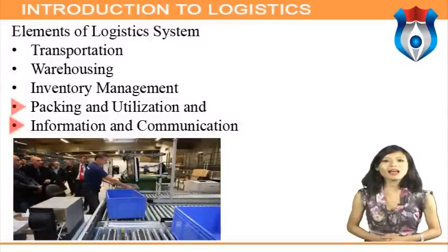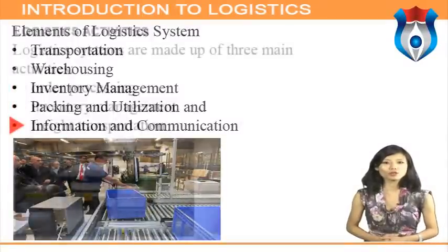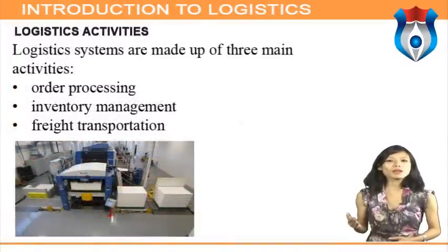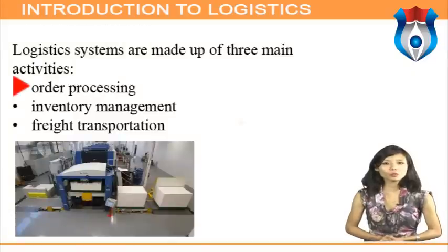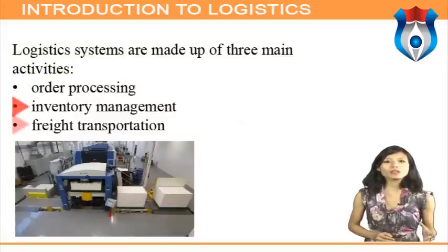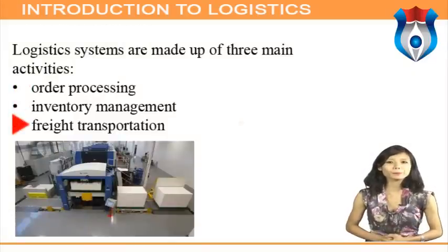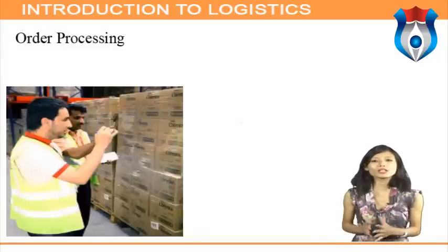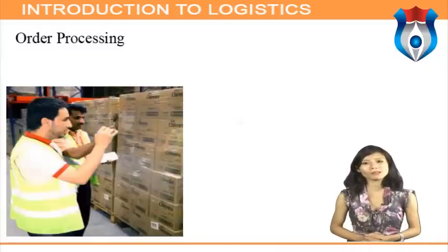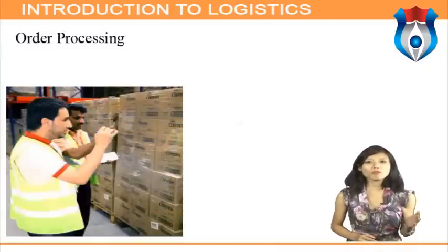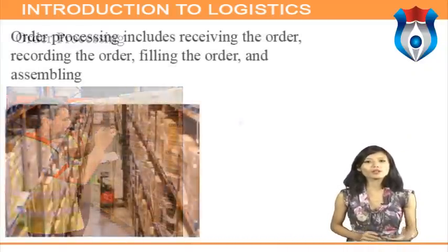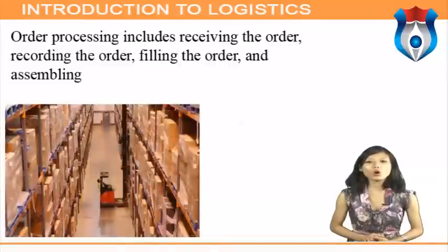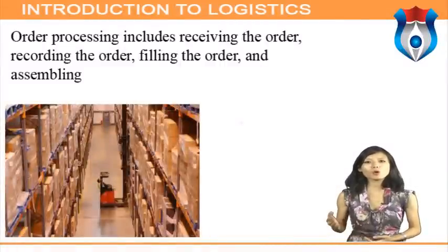The elements of logistics systems are transportation, warehousing, inventory management, packing and utilization, and information and communication. Logistics systems are made up of three main activities: order processing, inventory management, and freight transportation. Order processing is strictly related to information flows in the logistics system and includes receiving the order, recording the order, filling the order, and assembling all such orders for transportation.